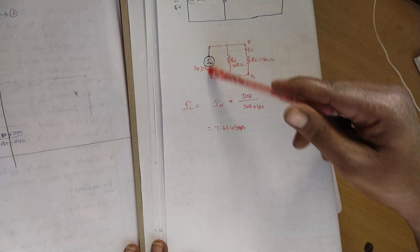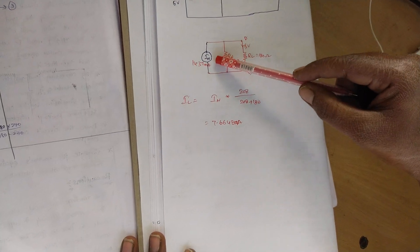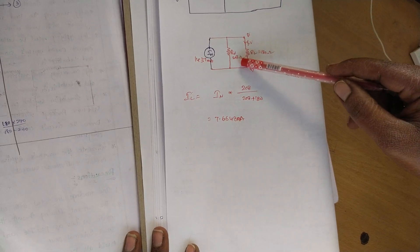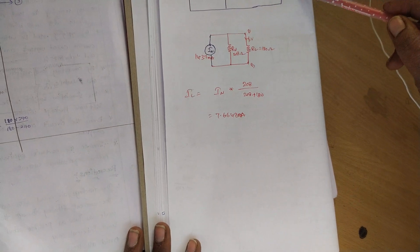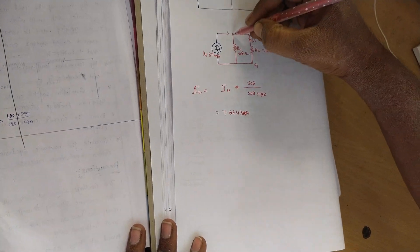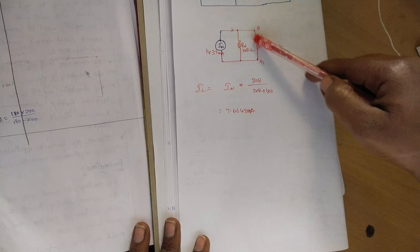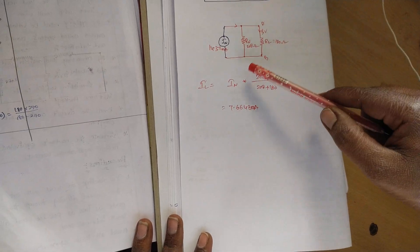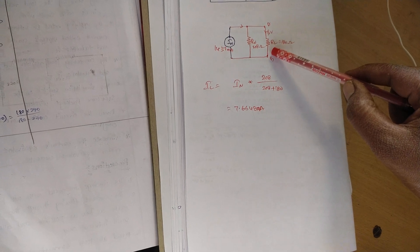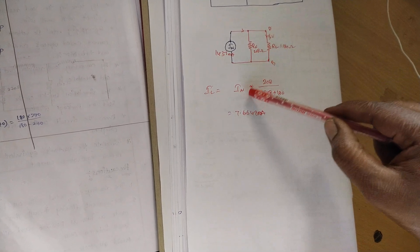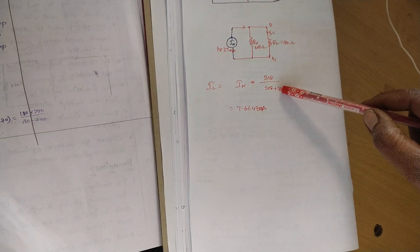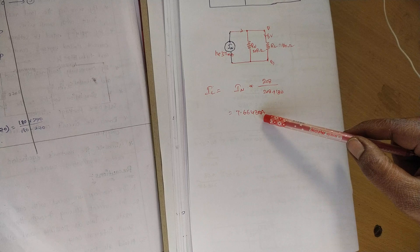In the equivalent circuit we substitute: Norton's current IN is 14.37 milliamps, RN is 208 ohm, and load resistance RL is 180 ohm. By using the current division rule, IN flows to the node and divides. The load current IL equals IN multiplied by the opposite resistance 208 ohm divided by the total resistance, giving approximately 7.664 milliamps.